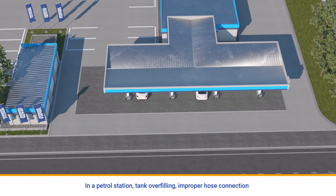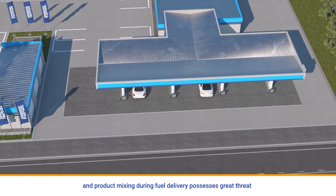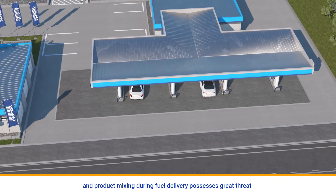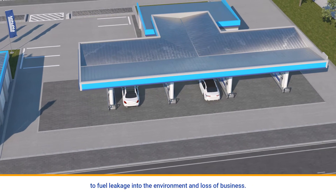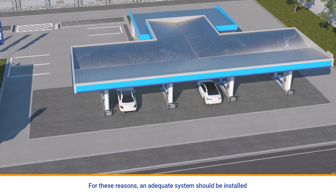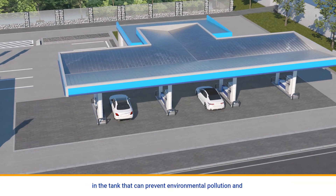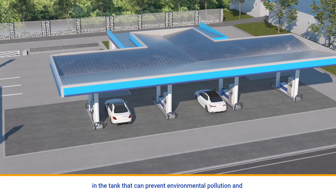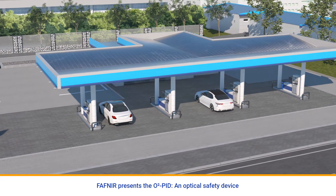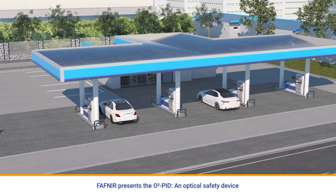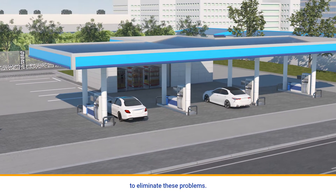In a petrol station, tank overfilling, improper hose connection, and product mixing during fuel delivery poses a great threat to fuel leakage into the environment and loss of business. For these reasons, an adequate system should be installed in the tank that can prevent environmental pollution and increase operational efficiency. Fafnir presents the O2PID — an optical safety device to eliminate these problems.